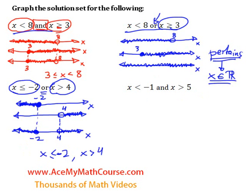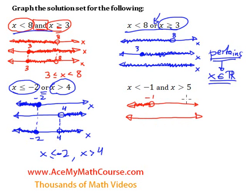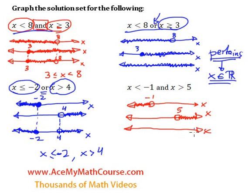Then finally, our last example. Let's draw a number line for x is smaller than negative 1. We're not including negative 1 because it's not equal to, and we highlight the area to the left of negative 1. Then we highlight the area to the right of 5 for x is greater than 5. Now for the solution set, we're looking for the intersection between the two — whatever both of them have in common. And in this case, they have nothing at all in common, so this is the solution set.